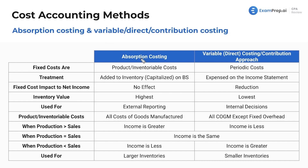So what are these two methods? It seems a little complex, but my job is to demystify it for you. It's sort of the same as what we've seen with spoilage and product versus periodic costs. One method capitalizes costs and the other method expenses costs. There are a good amount of exam questions about this, so I would definitely know it.